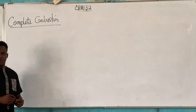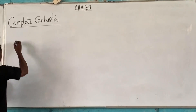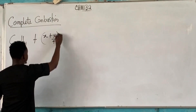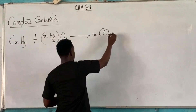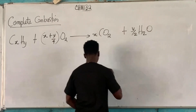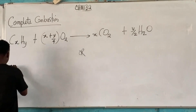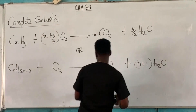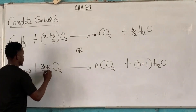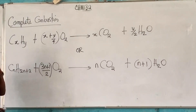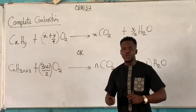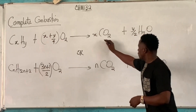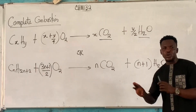Here is the general formula for combustion reaction. We have CₓHᵧ + (X + Y/4)O2, giving XCO2 + Y/2 H2O. These are the two formulas for complete combustion reaction, and they can help us balance any combustion reaction. Once it is complete combustion, the two products are CO2 and water — those are constant.